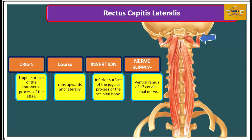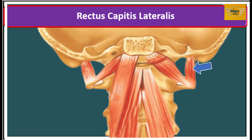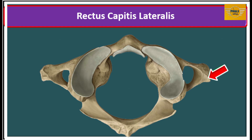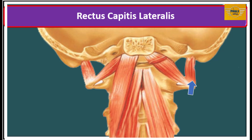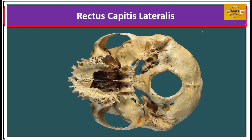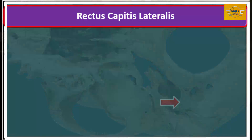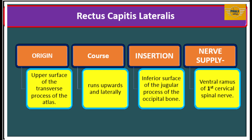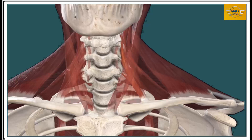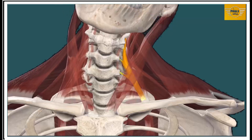The rectus capitis lateralis picks its origin from the upper surface of the transverse process of the atlas. From here, it runs upwards and laterally to insert on the inferior surface of the jugular process of the occipital bone. This muscle is innervated by the ventral ramus of C1 spinal nerve. Its action is lateral flexion of the head to the same side.